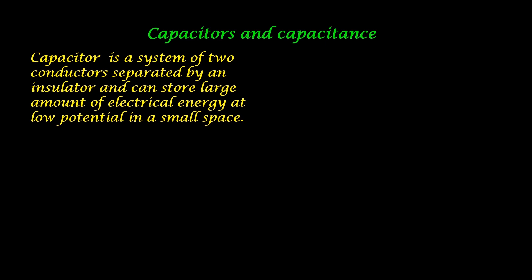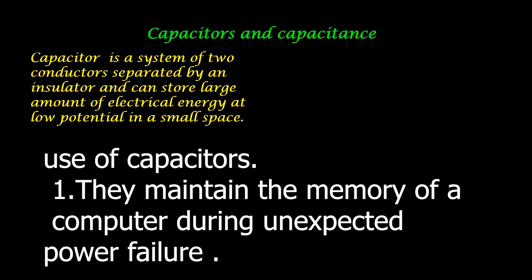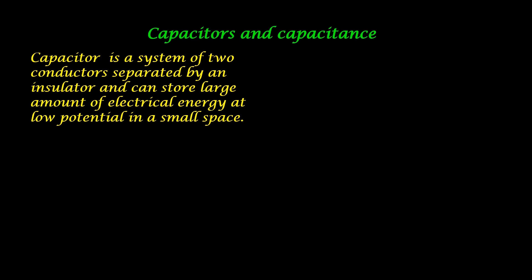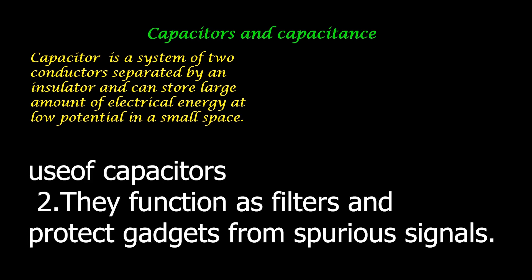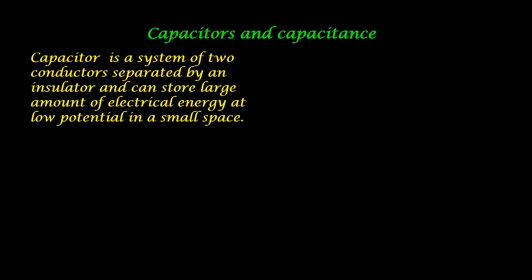Passive electric components means they do not require electricity from an external source to function. A capacitor is already charged — that is, it has a lot of electrical energy stored in it. For example, in a computer, it can maintain memory when there is a sudden power failure. In some other gadgets, they function as filters and protect gadgets from spurious signals — spurious signals meaning unwanted signals, such as unwanted signals generated by an amplifier.